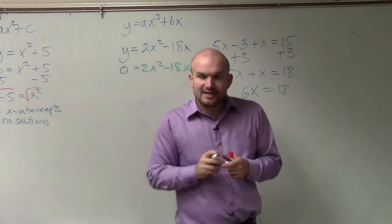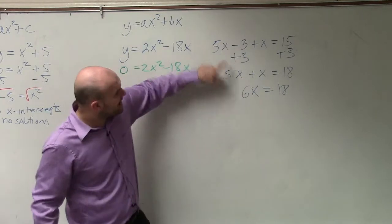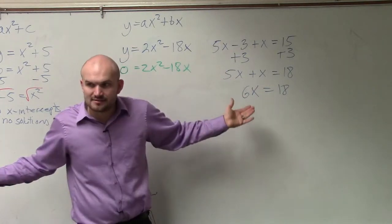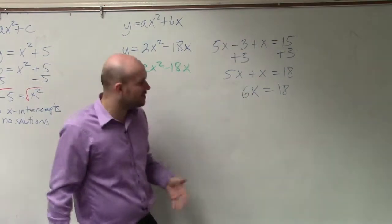Now, the issue that we have, when we look at the linear equation, I could easily combine 5x and x, right? We can't deal with that. 5x and x have the same variable factors. So we can combine them. They're like terms.